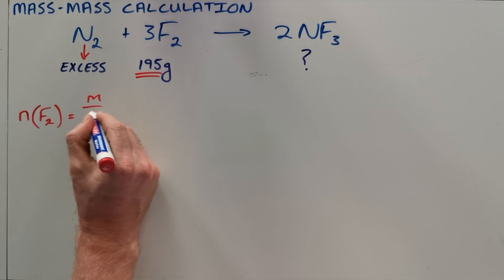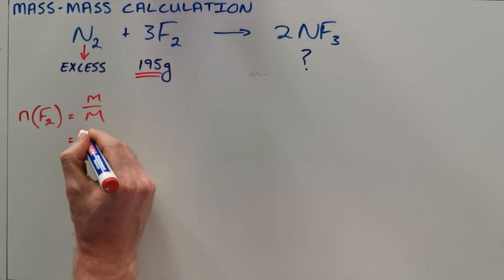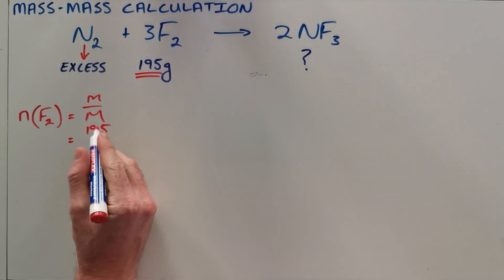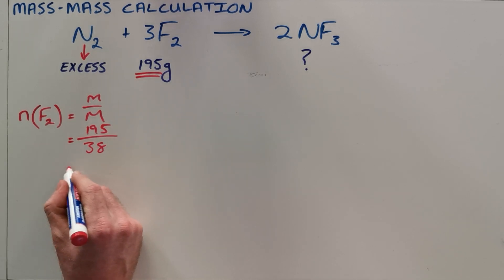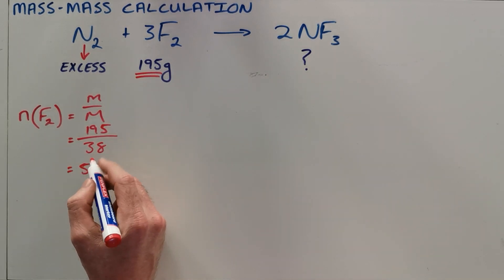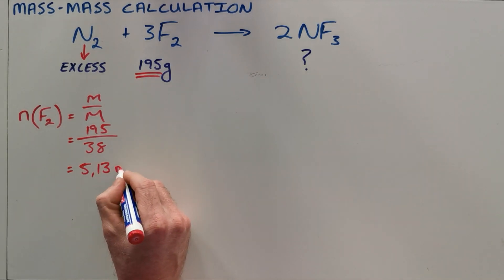Using this formula here, where the mass has been given as 195 grams, the molar mass we have calculated as 38 grams, so we know that 195 grams of fluorine is 5.13 moles of fluorine.